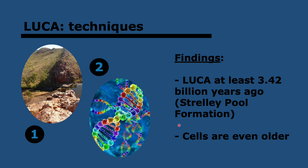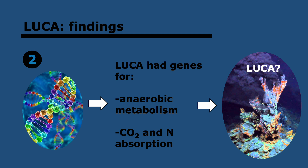The second technique is genetic information. If you look at the number of differences between two genomes — the genetic information of two organisms — that difference is proportional to the time since they diverged in the tree of ancestry, which can help estimate how long ago an organism formed. Genetic information has led to findings that LUCA must have had genes for anaerobic metabolism — metabolism without oxygen — and the use of CO₂ and nitrogen. This leads to the idea that LUCA probably lived near hydrothermal vents: cracks in Earth's surface where hot water gushes out with iron sulfide, almost no oxygen, and high concentrations of CO₂ and nitrogen.